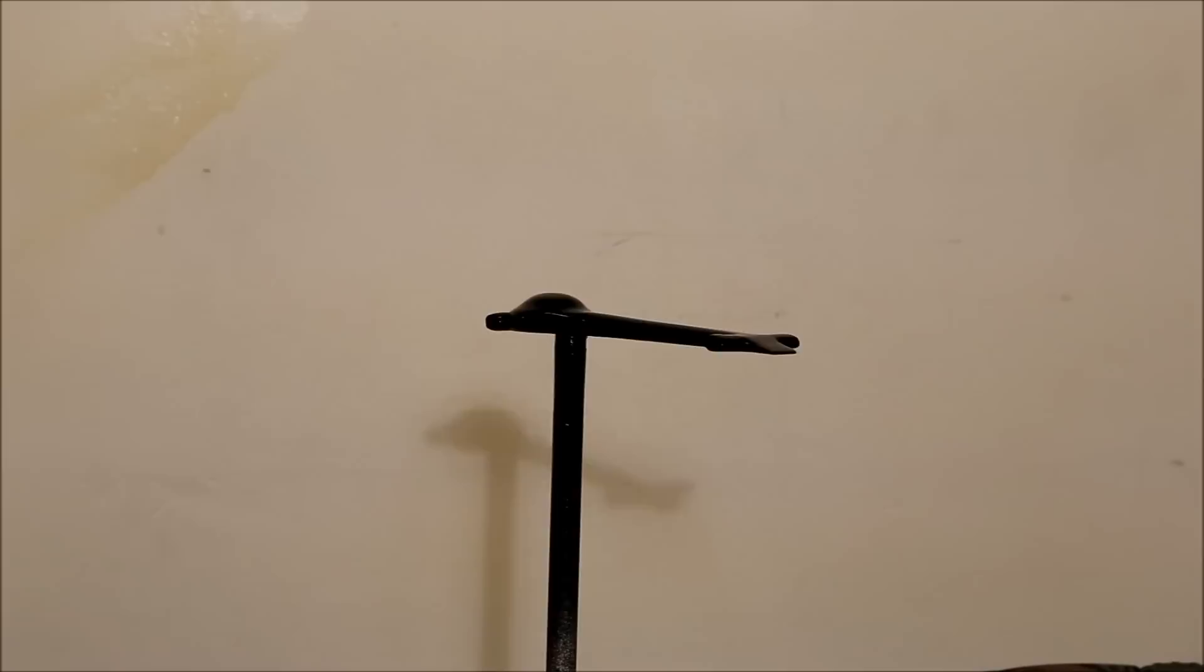And then to get the absolute smoothest, glassiest finish, I put a wet coat on. This is a slightly heavier coat that allows the paint to flow together to create a mirror-like finish. This is a very tricky step to do because if you get just a little too much paint on, you start getting runs. But it's absolutely essential to get a mirror-like reflection off of the chrome paint.